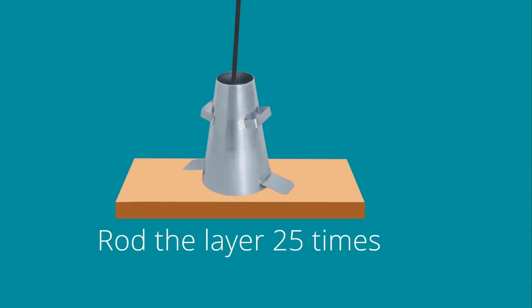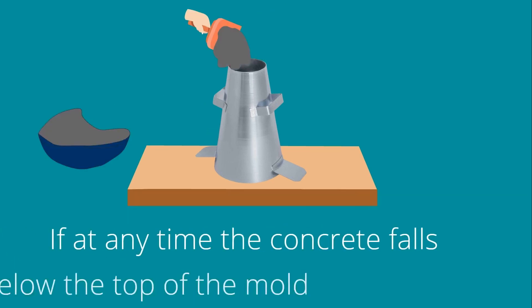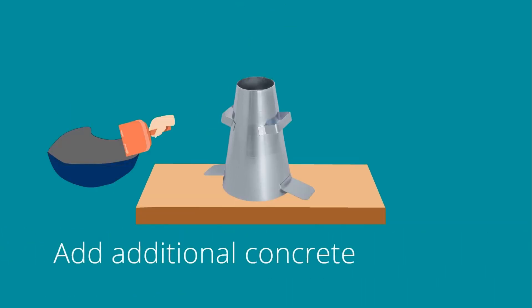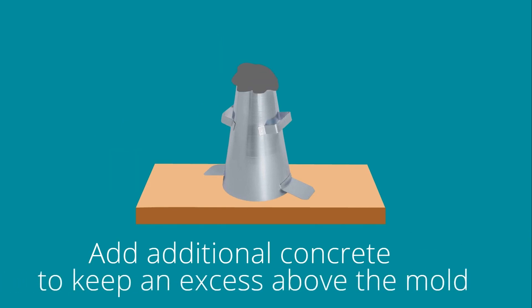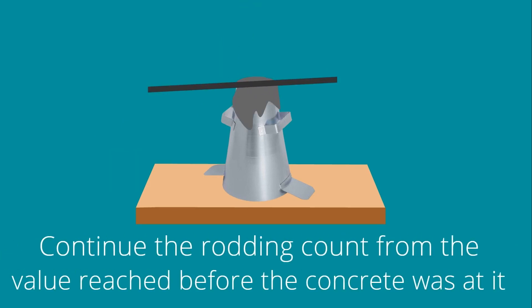Rod the layer 25 times, making sure to penetrate into the second layer approximately 1 inch. If at any time the concrete falls below the top of the mold, add additional concrete to keep an excess above the mold. Continue the rodding count from the value reached before the concrete was added.